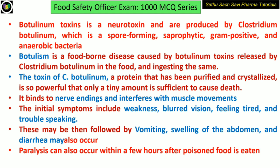Botulinum toxin is a neurotoxin mainly produced by Clostridium botulinum, which is a spore-forming, saprophytic, gram-positive and anaerobic bacteria. Botulism is a food-borne disease caused by botulinum toxin released by Clostridium botulinum in the food. The toxin, a purified and crystallized protein, is so powerful that only a tiny amount is sufficient to cause death. It binds to the nerve endings and interferes with muscle movement. Initial symptoms include weakness, blurred vision, fatigue, and trouble speaking, followed by vomiting, swelling of the abdomen, and diarrhea. Paralysis can also occur within a few hours after poisoned food is ingested.